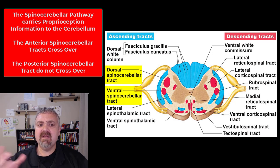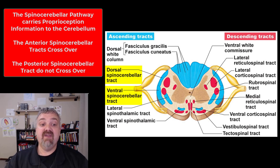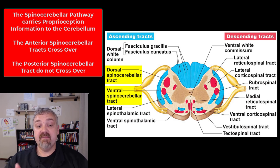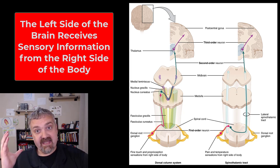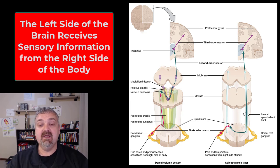Next we have the spinocerebellar pathways. Obviously this is sending information up towards your cerebellum, so this is going to be proprioceptive information. Remember, the cerebellum is responsible for balance, posture, and coordination — it can't do that without information from your muscles and joints. There are two spinocerebellar tracts: the anterior or ventral spinocerebellar tract, and the posterior or dorsal spinocerebellar tract. The difference is that the anterior spinocerebellar tract crosses — the information crosses to the other side of the body. The posterior spinocerebellar tract does not cross, which is pretty rare since almost always information crosses from one side of the body to the other. As a reminder, the dorsal columns and spinothalamic tracts do cross over, so not only does the right side of your brain control the left side of your body, but it also receives sensory information from the left side of your body.